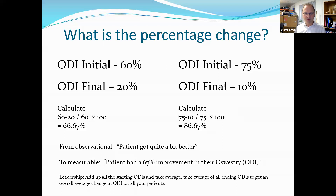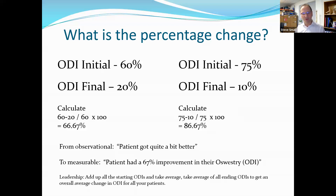If you have a program like IDD therapy and you're treating a certain category of patient, you can use this on all of your patients. You could add up all of your starting ODI scores and end scores to get an overall percentage. A lot of practices are busy day-to-day and don't think about this, but it's a really straightforward way to demonstrate your own outcomes.